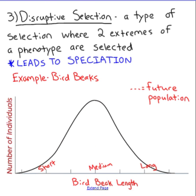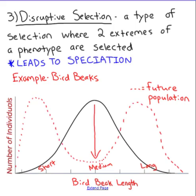Finally, disruptive selection is a bigger one because it leads to speciation. This is the type of selection where two extremes of a phenotype are selected. The best example is bird beaks observed in the Galapagos. On an island with birds having short, medium, or long beaks: short beaks are really good for eating insects, and long beaks are really good at cracking open nut shells. Disruptive selection is the opposite of stabilizing — the medium version is selected against, and either extreme is favored. You can see two curves forming, representing two different populations.